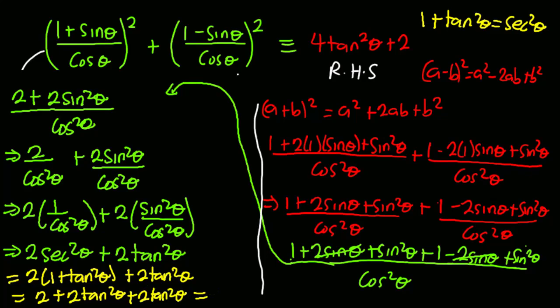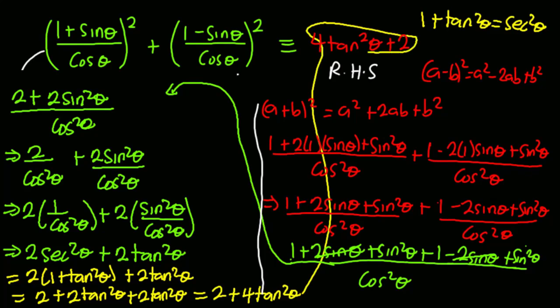So this equals 2 + 4tan²θ, which is exactly what we have on the right-hand side. By this we've been able to prove that the left-hand side is equal to the right-hand side. Thank you for watching this video, and please don't forget to subscribe to this channel.